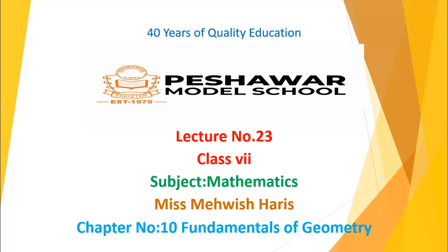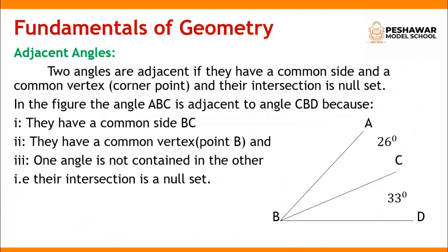In this chapter we have to learn about some definitions of geometry. Before starting our topic on adjacent angles, I will explain something about the basic concepts of geometry. A line segment: if A and B are any two points, then the line segment AB is a set consisting of point A and B and all the points between A and B. Points A and B are called the end points of a line segment.